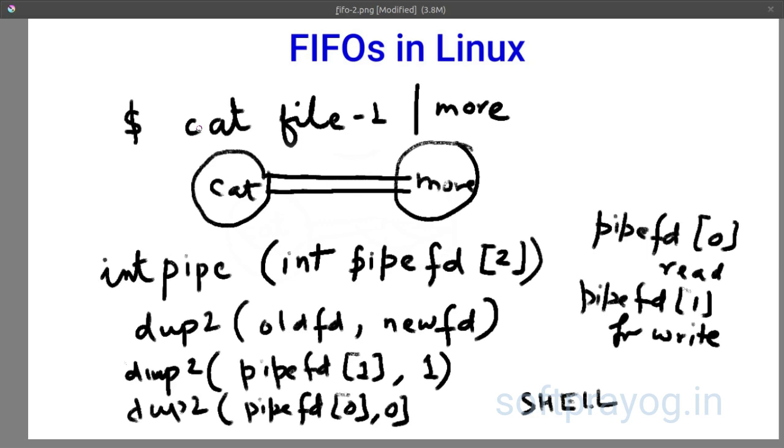You can see this command. So what it actually means that either these two processes cat and more they should have some relationship. They should share a parent like shell who can set up the pipe or they can be parent and child so that the parent process can set up the pipe and communication can be done on a pipe. So there should be some relationship.